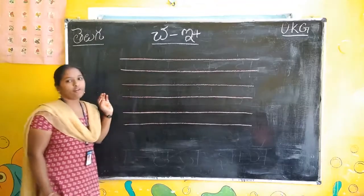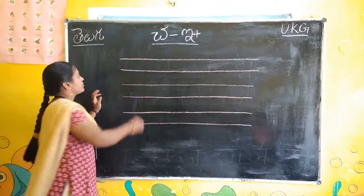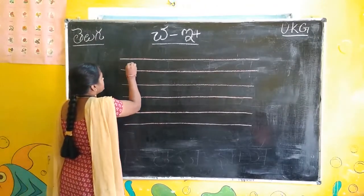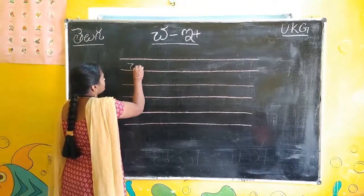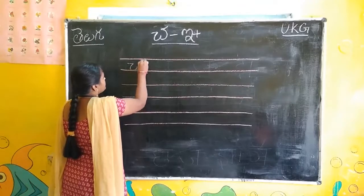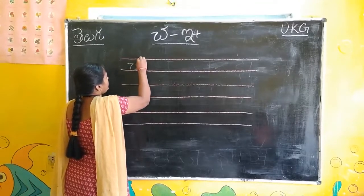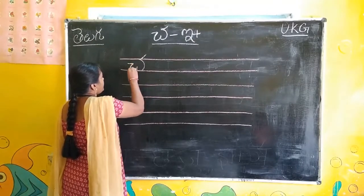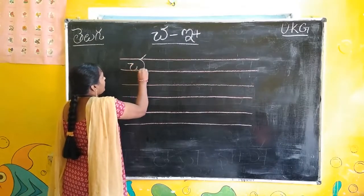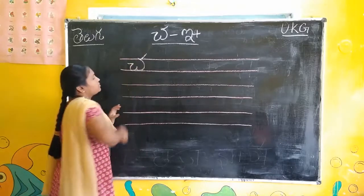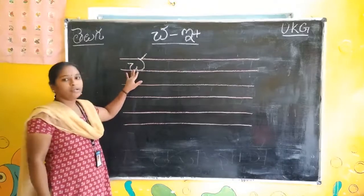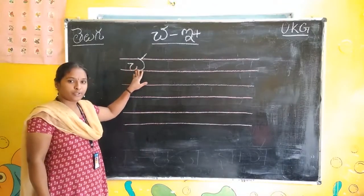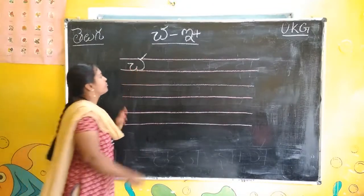Look here all of you. First letter — Cha. Watch carefully: always there should be a line on top and a line below. Cha. Cha. Chandrudu.